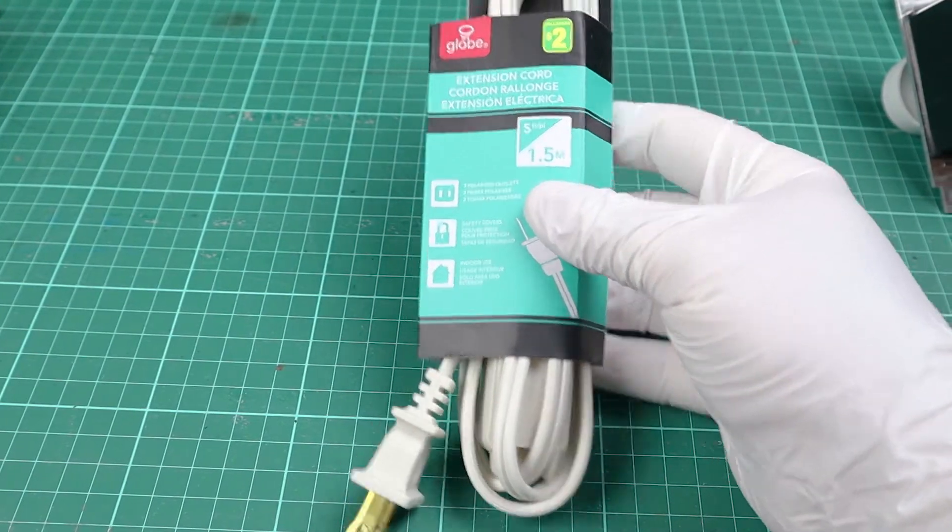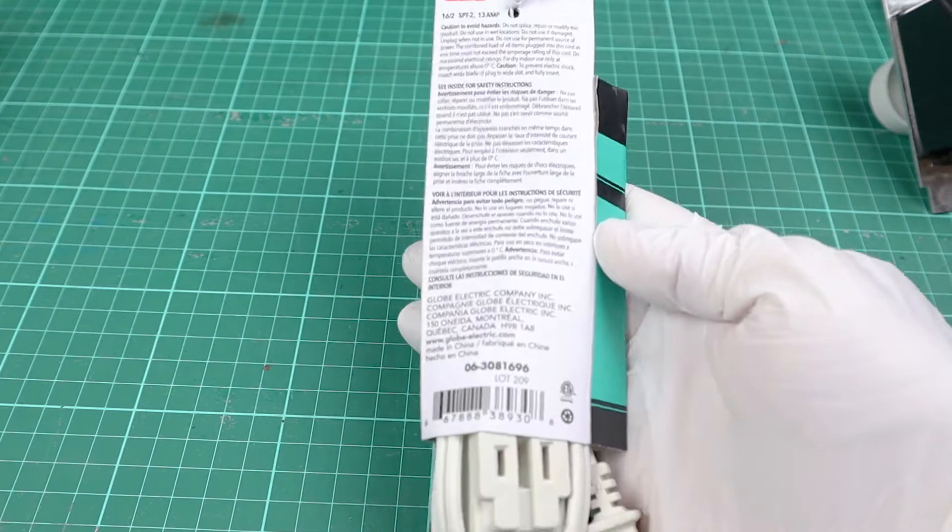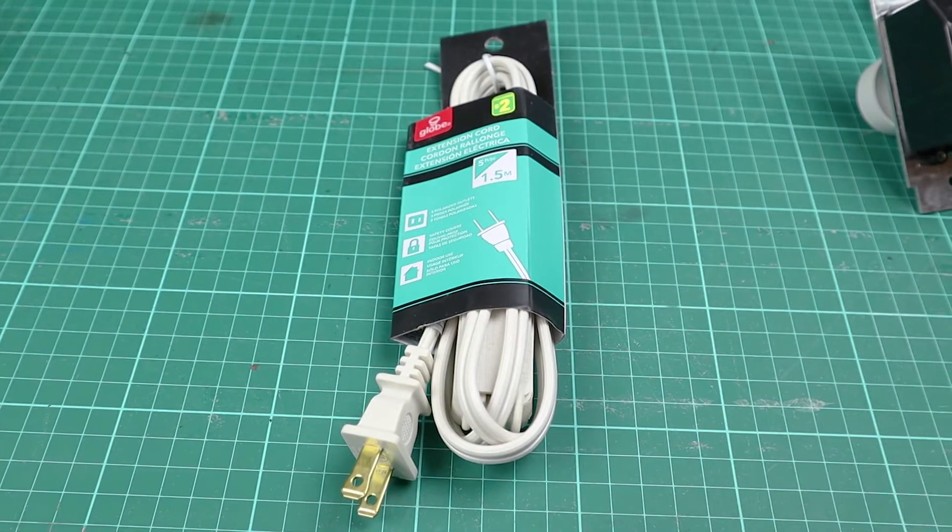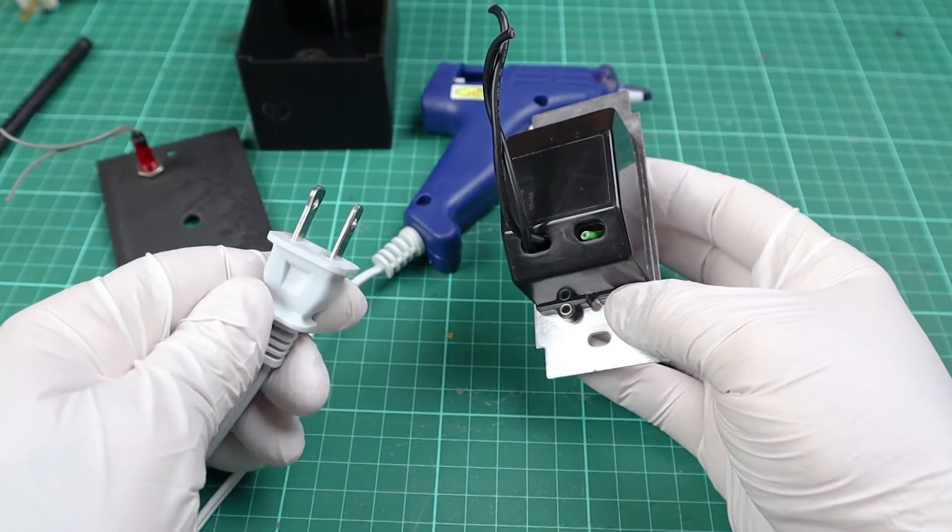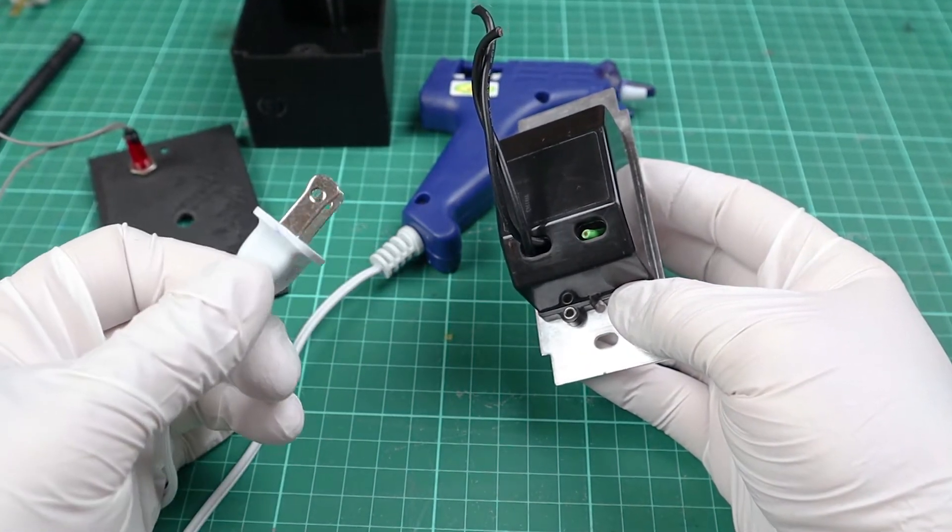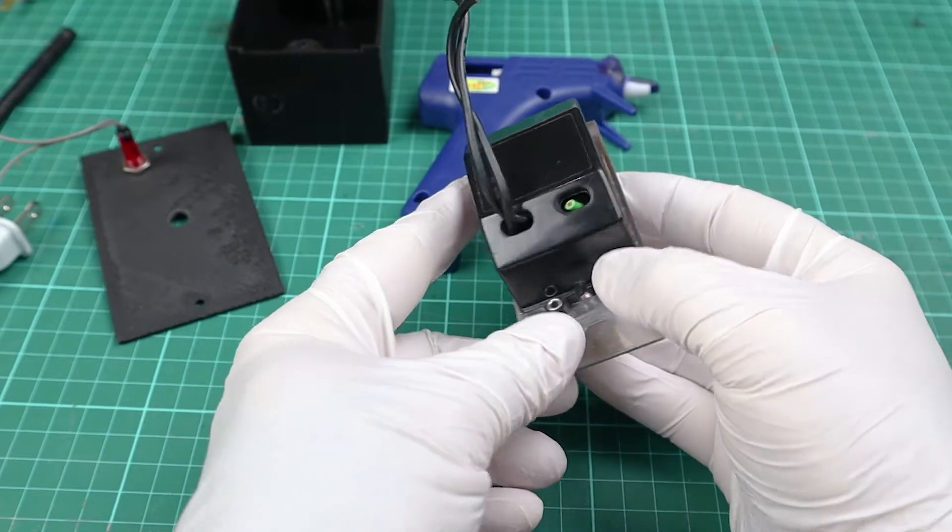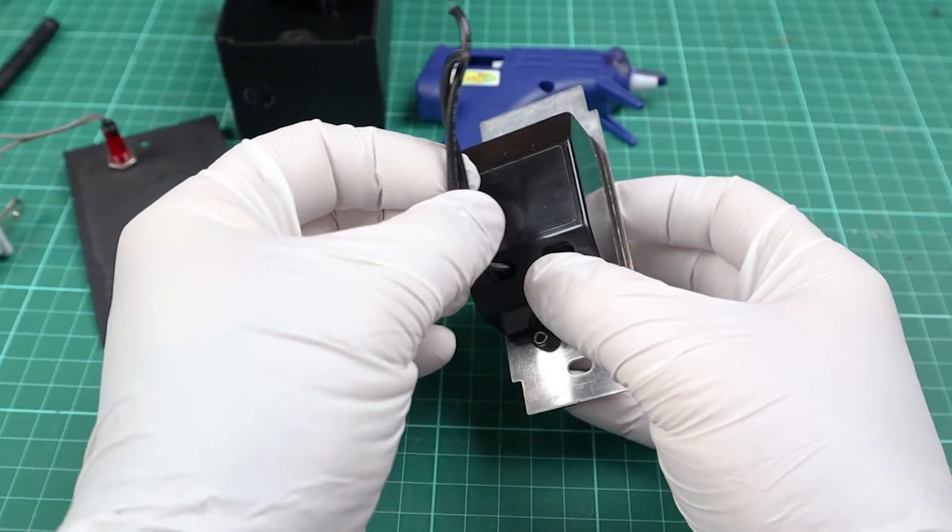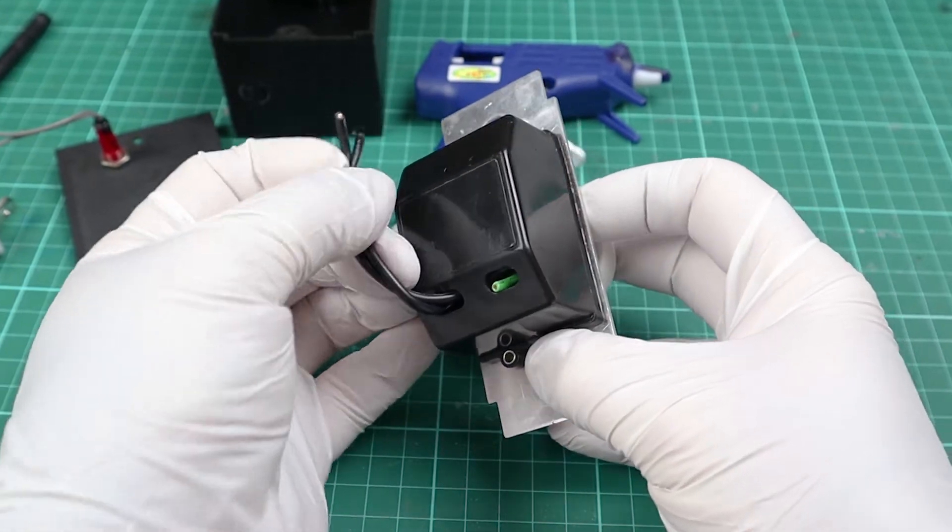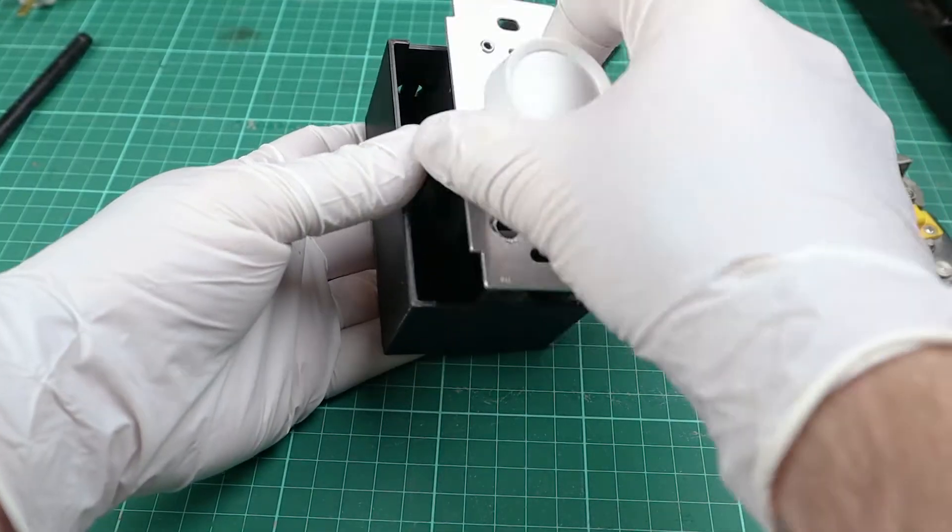This dimmer switch will have three wires on the back of it. Two black wires and one green wire. We don't need the green wire because there's only two prongs on the plug for these glue guns. So we can cut that green wire off. Now take all this information with a grain of salt. I am an illustrator, not an electrician. So be careful when you're doing this stuff.